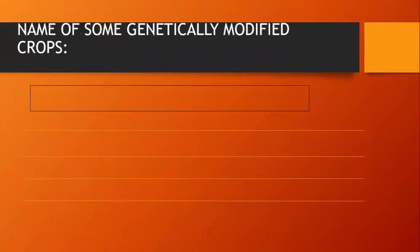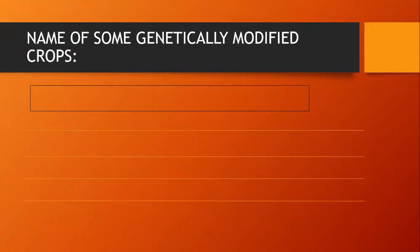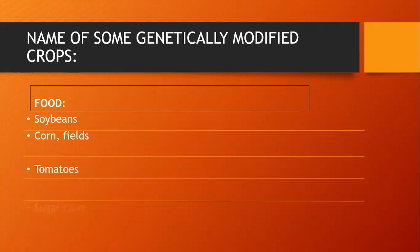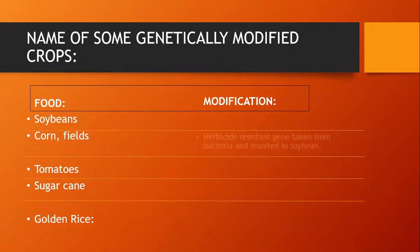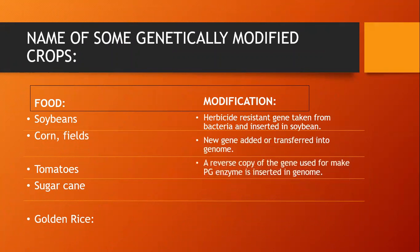Some genetically modified crops include foods like soybeans, corn, tomatoes, sugarcane, and golden rice. Soybeans are produced by taking a herbicide resistant gene from bacteria and inserting it into the soybean genome.